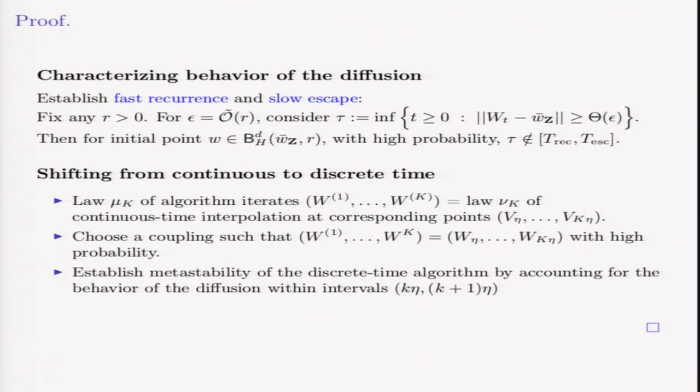We do that by nice properties of Brownian motion. It's Gaussian bounded with nice tails, and that gives us our result.